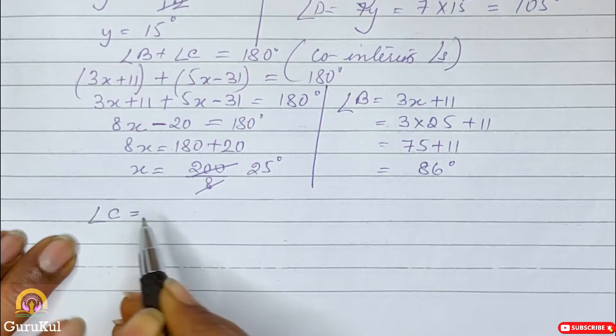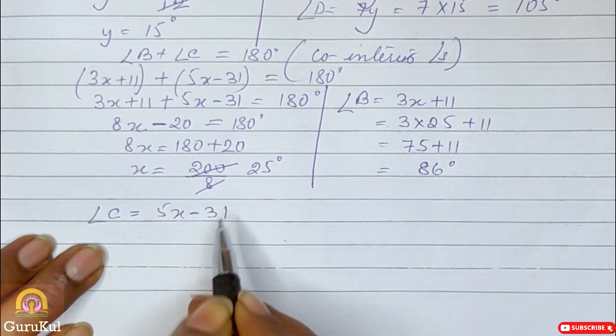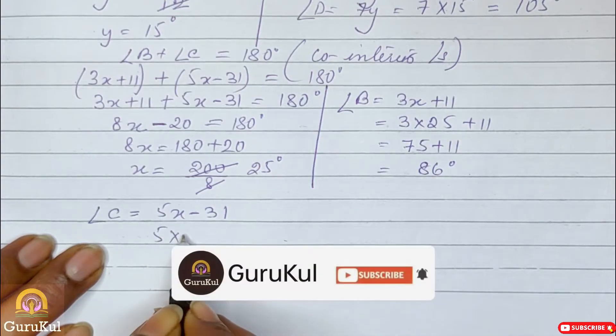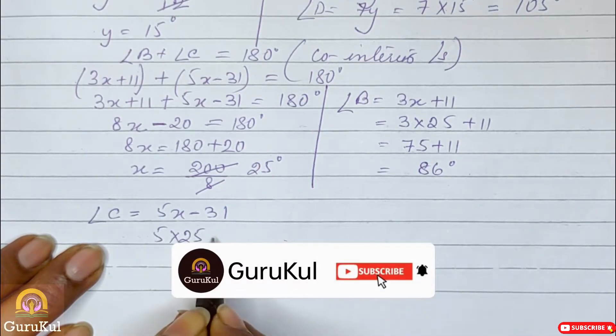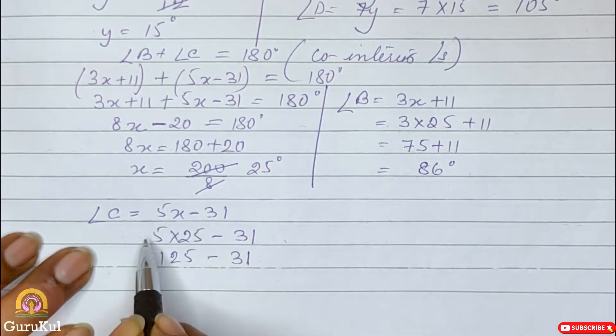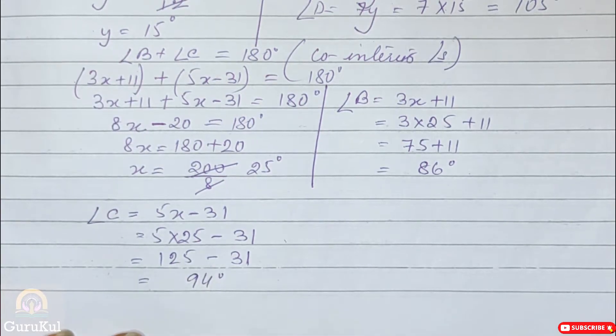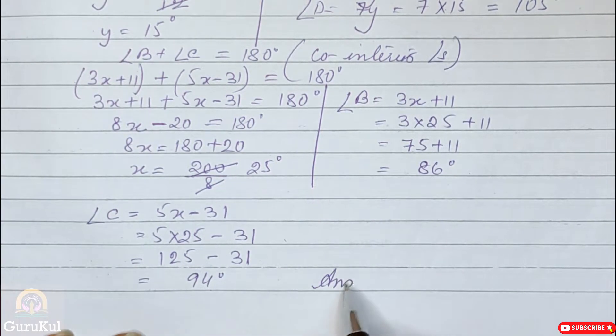Now angle C, it is 5x minus 31. So 5 into 25 minus 31. So 5 times 25 is 125 minus 31. So the value of angle C is 94 degree. And these are the answers.